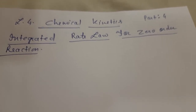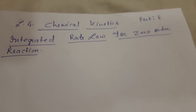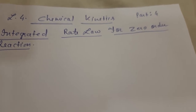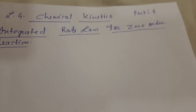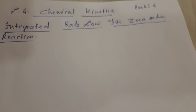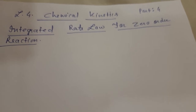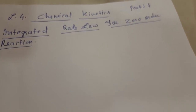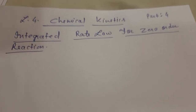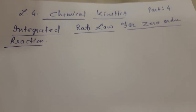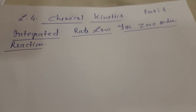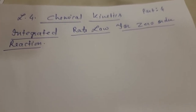Good morning children. Class 12 Science, Part 4 of Chemical Kinetics. This is very important. We have to understand the integrated rate law for zero order reaction — this always comes in board exams. We will also read the integrated rate law for first order reactions, but today I will tell you about the zero order reaction.